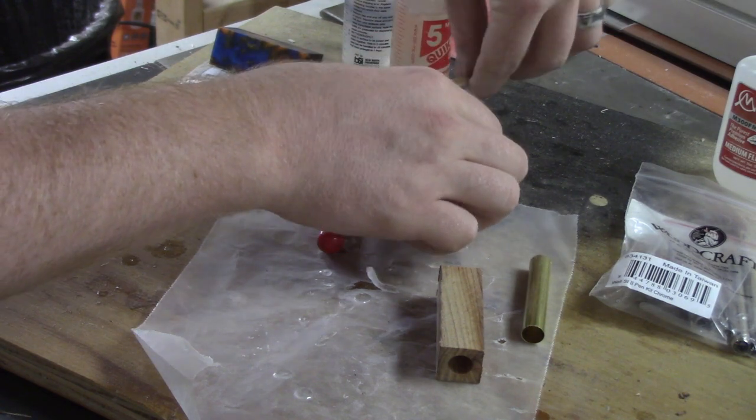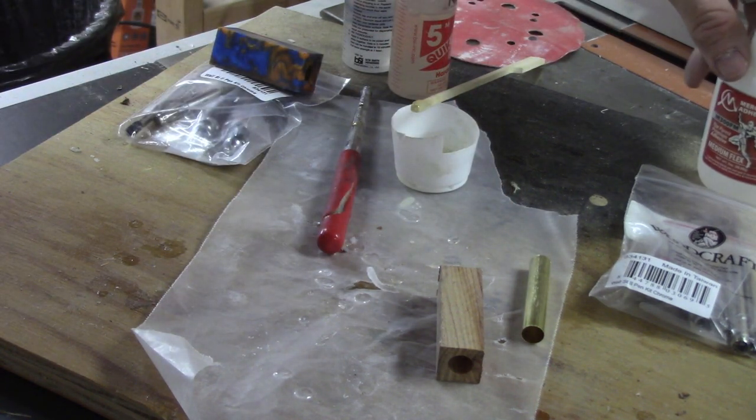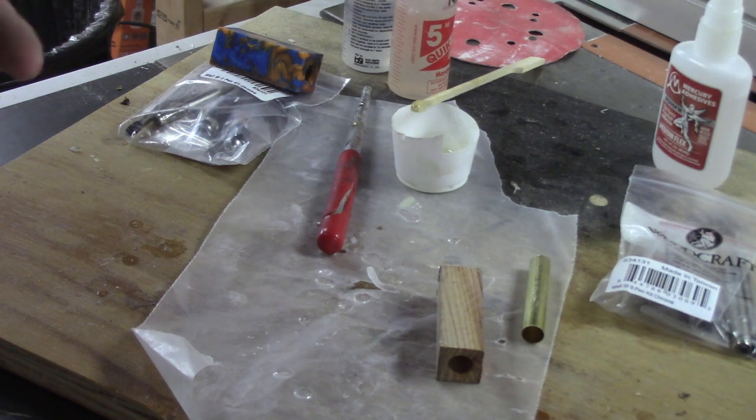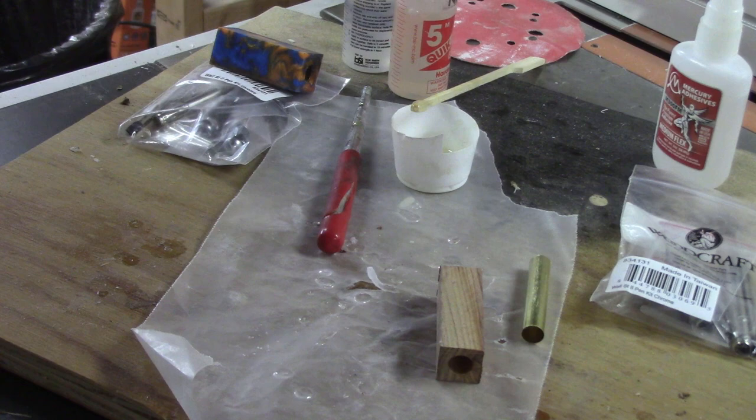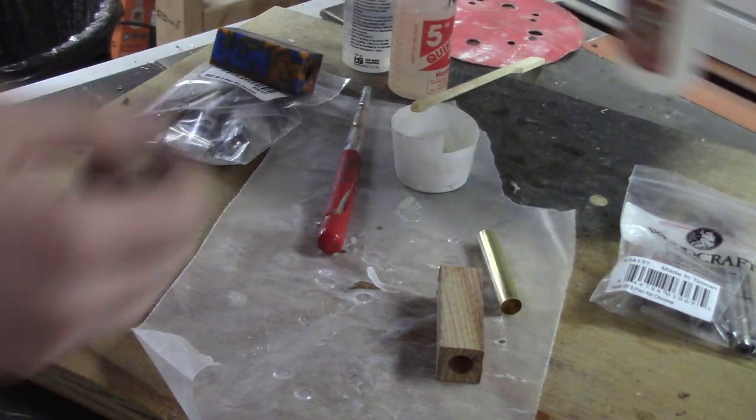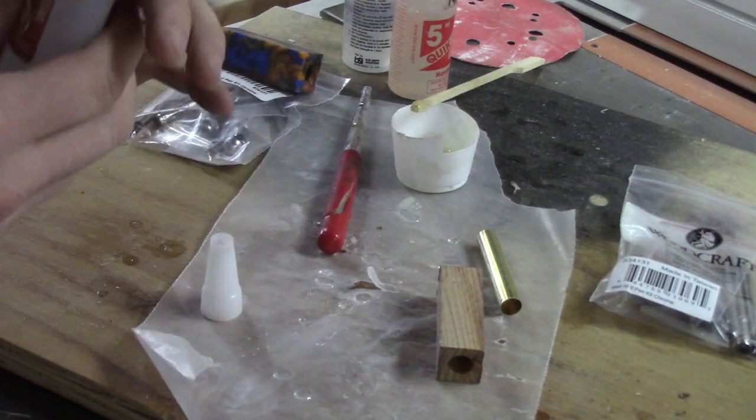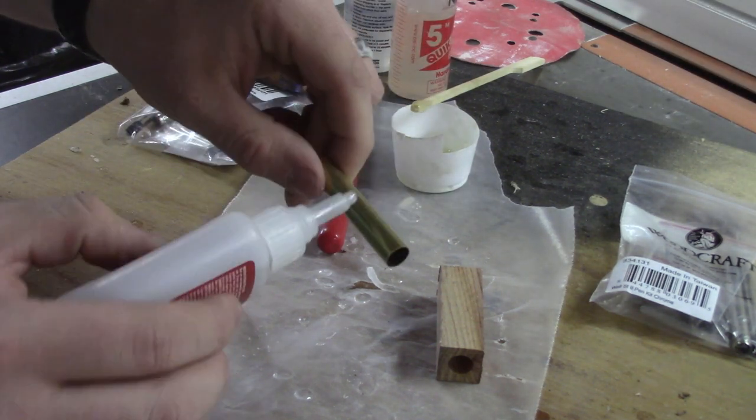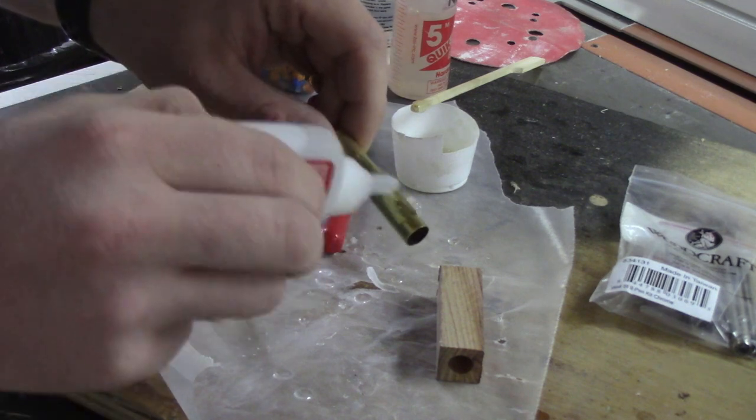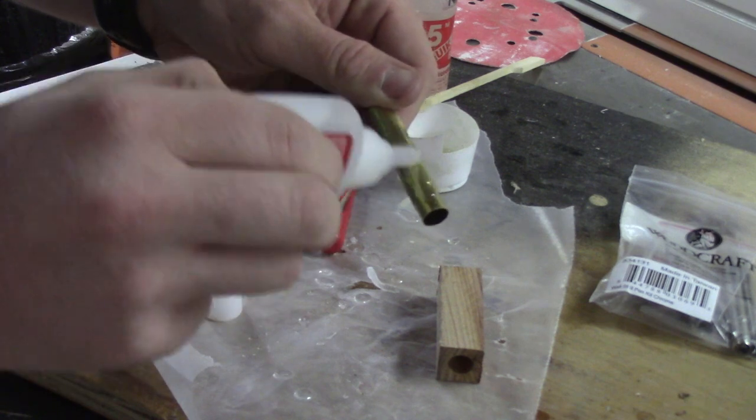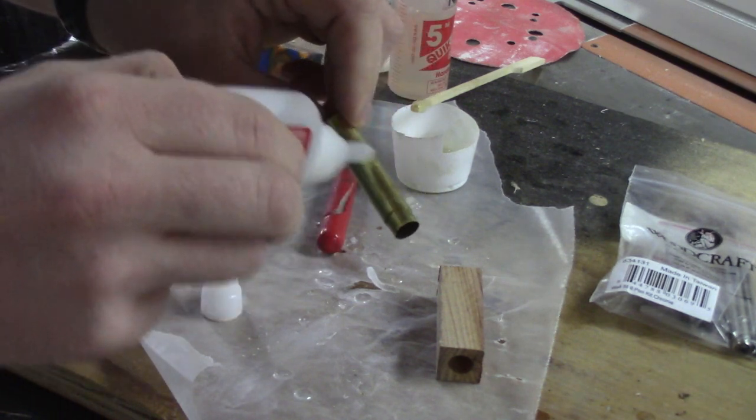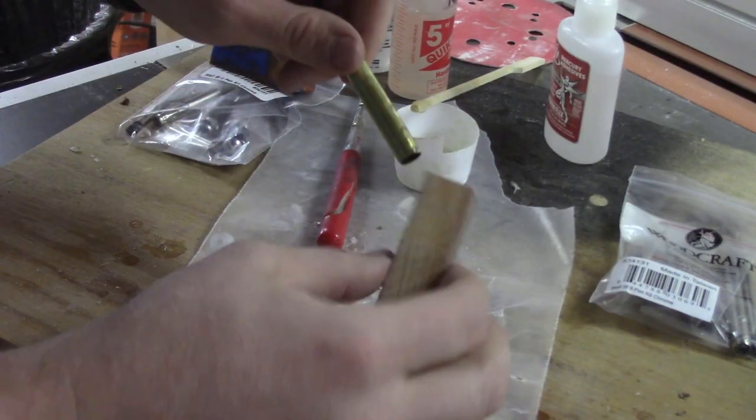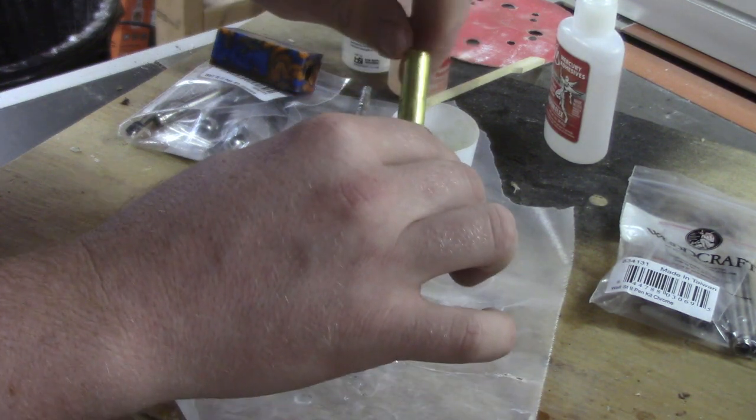Now when I go to do a wood blank, I use medium CA glue. There are some people who use epoxy, there are some people who use thin CA, thick CA, medium CA. Again, this is all what you find is useful to you in your shop and what you find works. This is what I find works. So we take our scratched tube that we scratched on sandpaper, and we're going to coat this tube in medium CA glue. You want to try to not get it on your fingers because CA glue and skin is a nightmare.